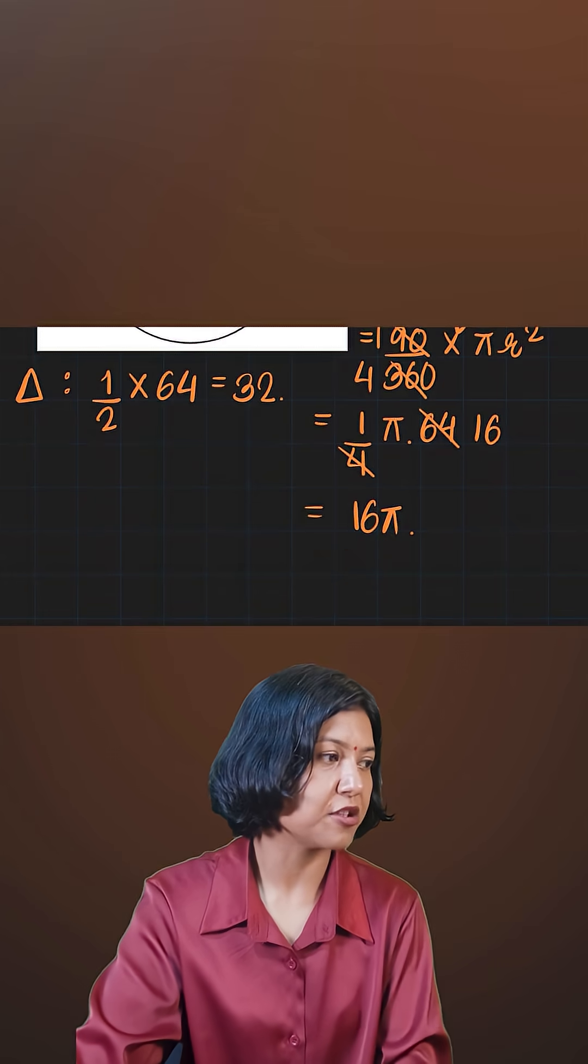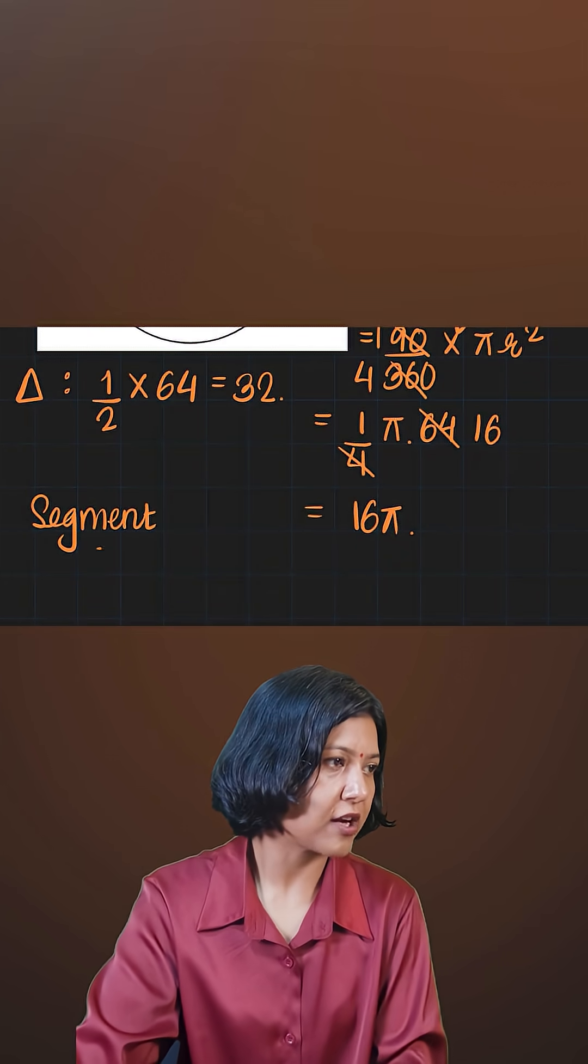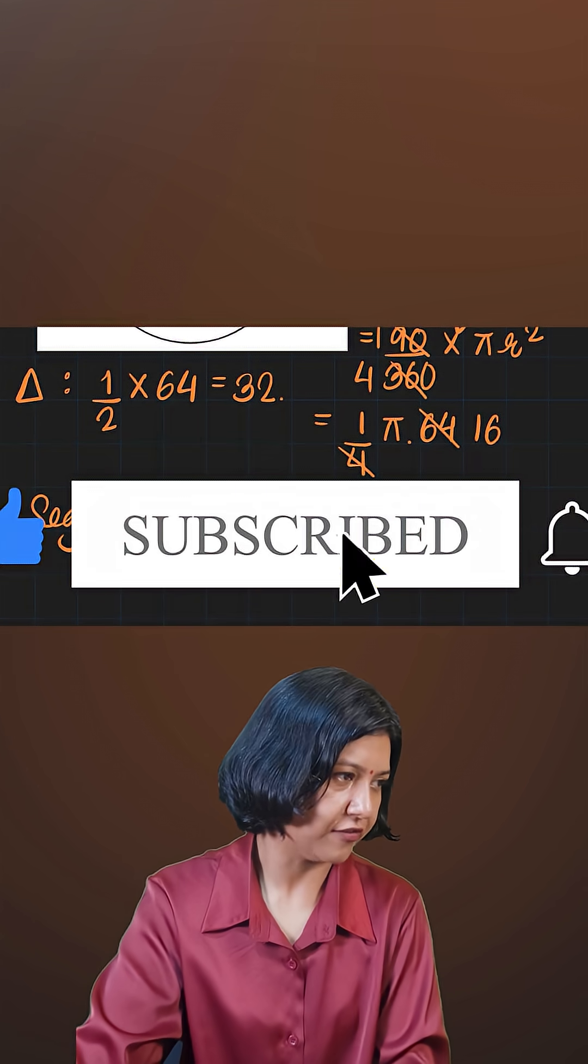So area of the segment is simply the difference of the two. For the segment, all you're doing is subtracting the area of the triangle from the area of the sector.